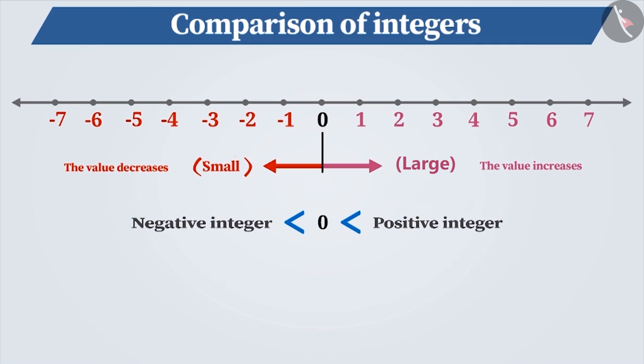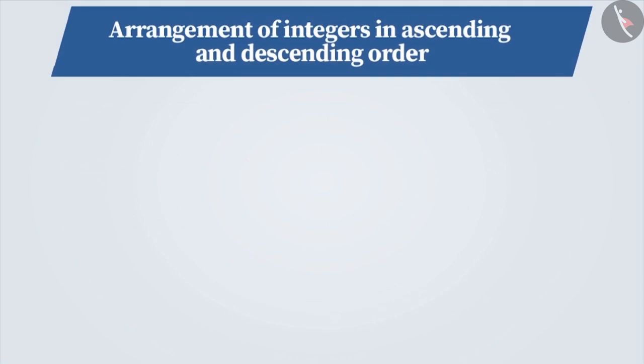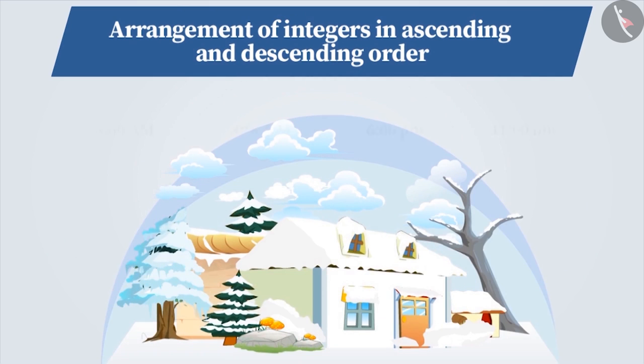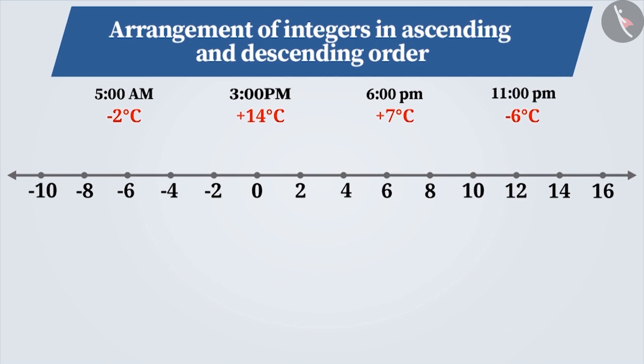By comparing the integers, we can arrange them in order. For example, listed below are the temperatures of a hill station recorded at different times of the day. Let us express these on the number line.